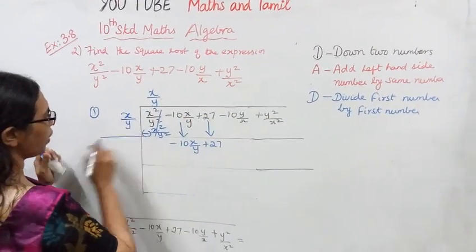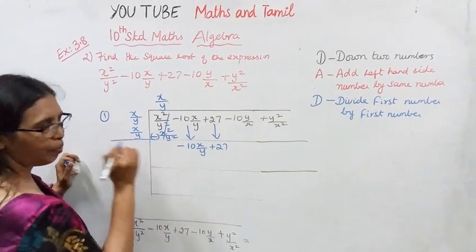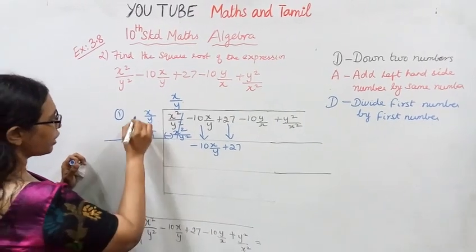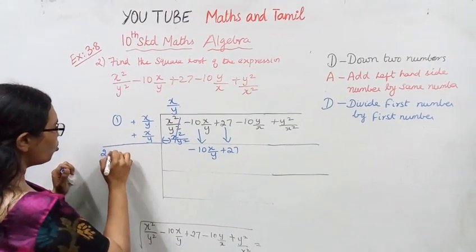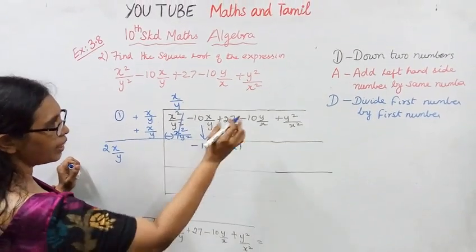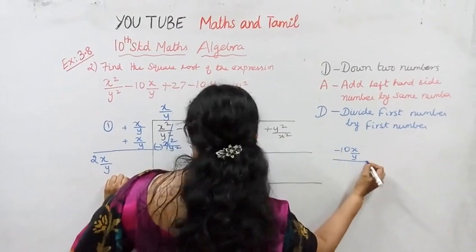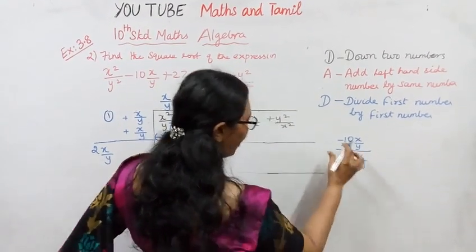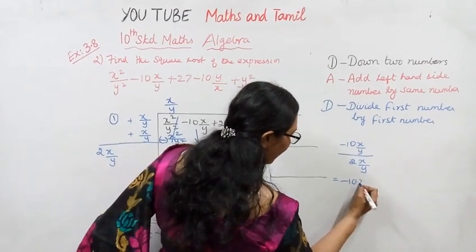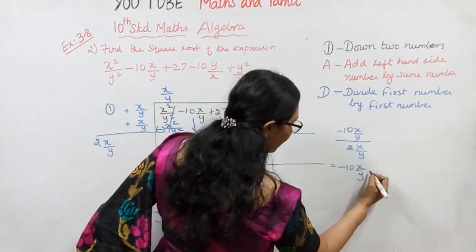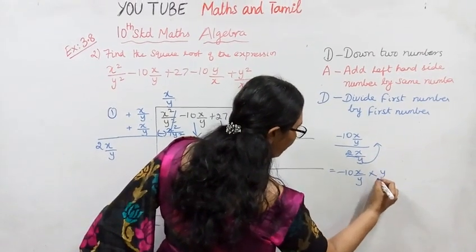So, number by same number — you will get x by y. Add left-hand side number by same number: x by y, and x by y. Then divide first number by first number — minus ten x by y divided by two x by y.